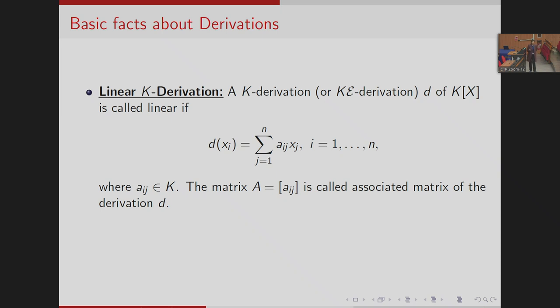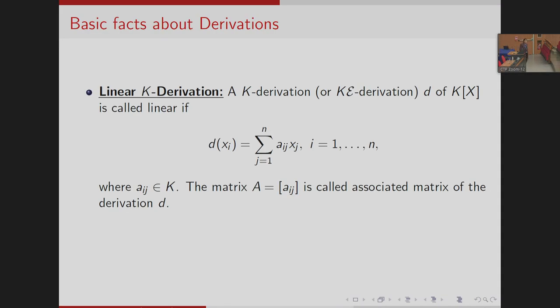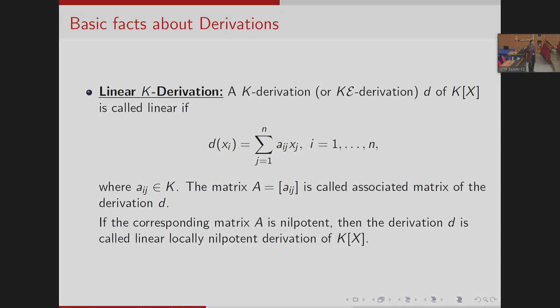A k-derivation D of k[x] is called linear if D(x_i) = sum over j from 1 to n of a_{ij} x_j, where the a_{ij}'s are elements of k. The matrix A is called the associated matrix of the derivation D. If this corresponding matrix A is nilpotent, then D is called a linear locally nilpotent derivation of k[x]. My work is mainly on linear k-derivations and linear k_e-derivations of k[x].